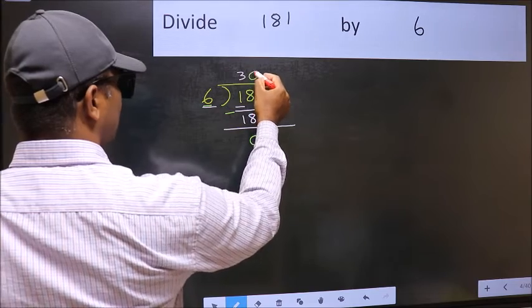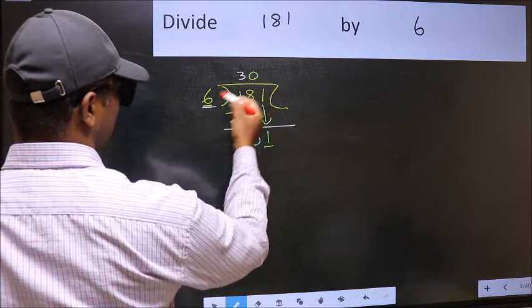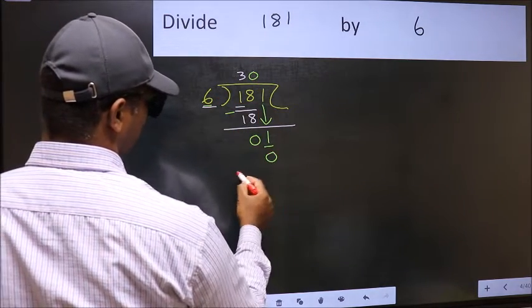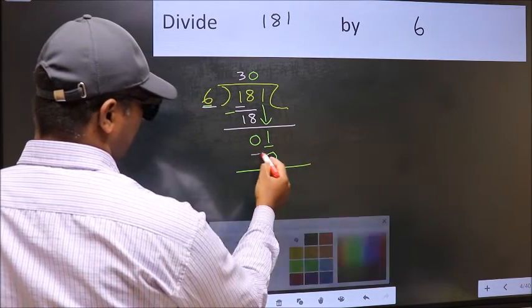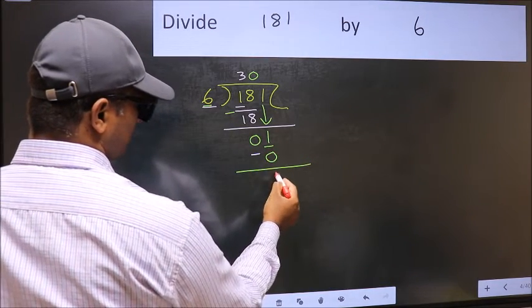So 6 into 0, 0. Now you should subtract. 1 minus 0, 1.